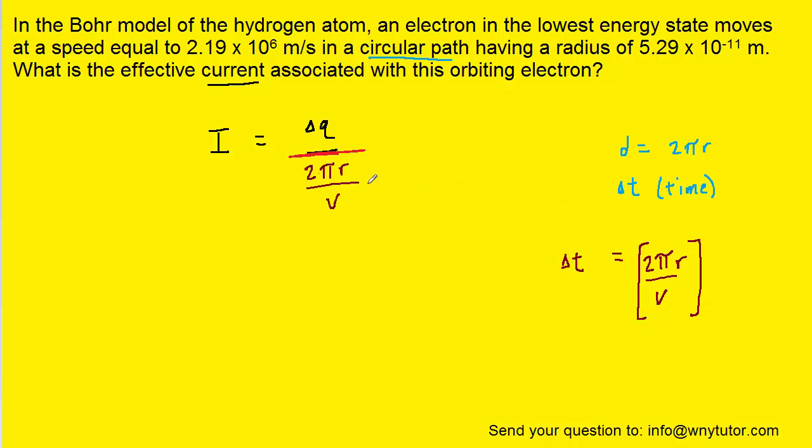Now we have a complex fraction. We can make it a little simpler if we multiply the bottom of the complex fraction by v and the top also by v. That way these v's here and here will cancel.